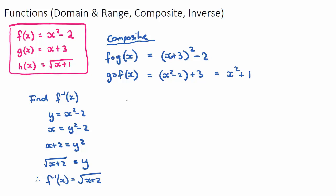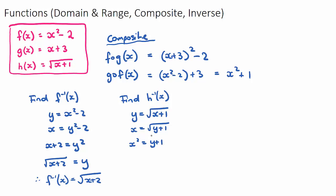To find the inverse of h(x) = √(x + 1), start with y = √(x + 1), then swap x and y: x = √(y + 1). Square both sides: x² = y + 1. Subtract 1: y = x² - 1. So h⁻¹(x) = x² - 1.